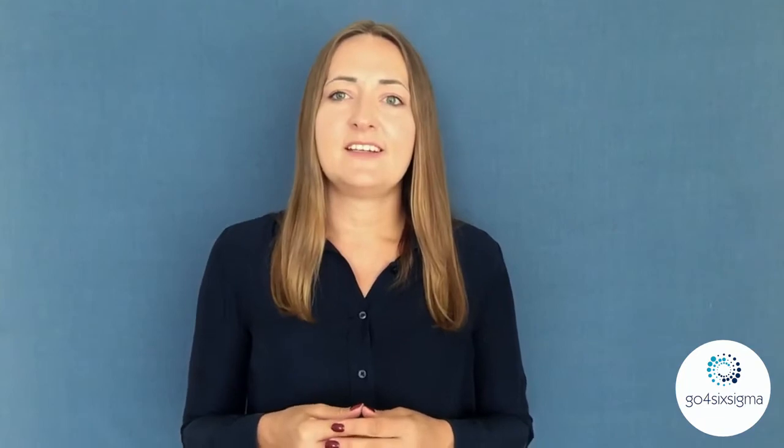The next part is the problem statement. Please include information about what the problem is related to your process, and be very precise. You can list three, four, or five problems — make sure they are listed here so that people who look at the project charter can understand what the real problem is. Please concentrate on the current state: what is the current problem in your current process?